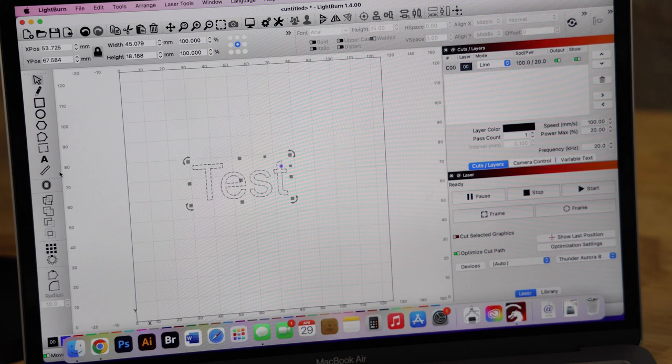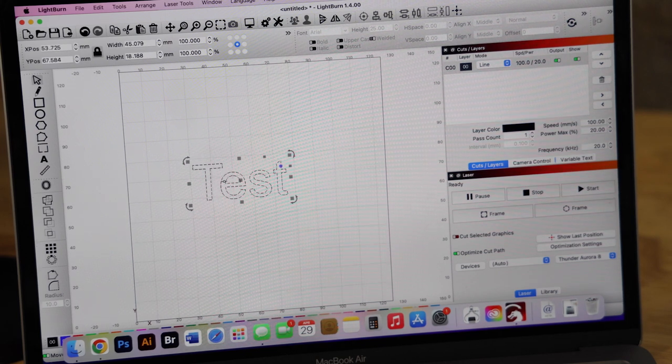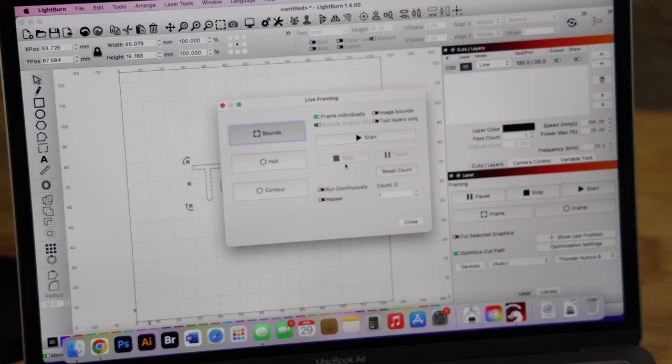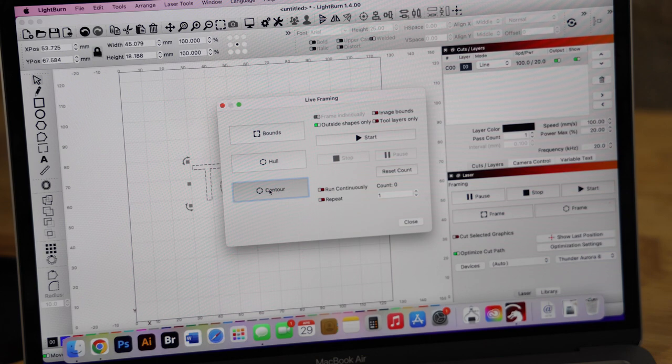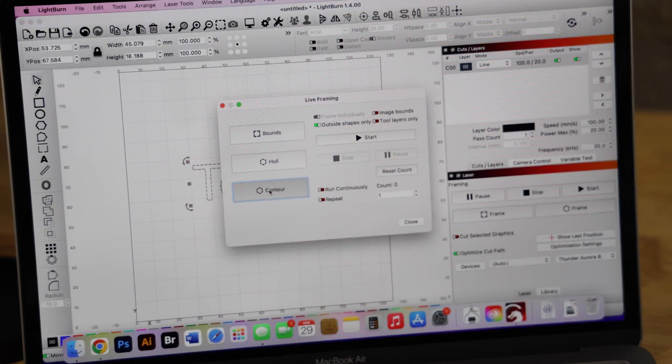So we're in Lightburn, and we just use the text tool to type out this word text. And now we're going to go over here and tell it to frame. Now in the framing option here, there's some different things that you can do. We're going to move this to contour. It kind of shows each letter the best.